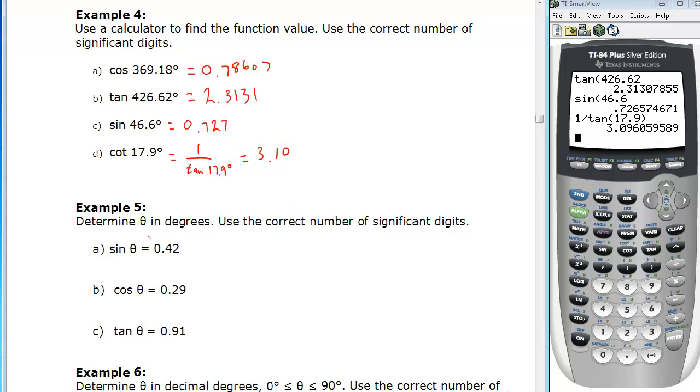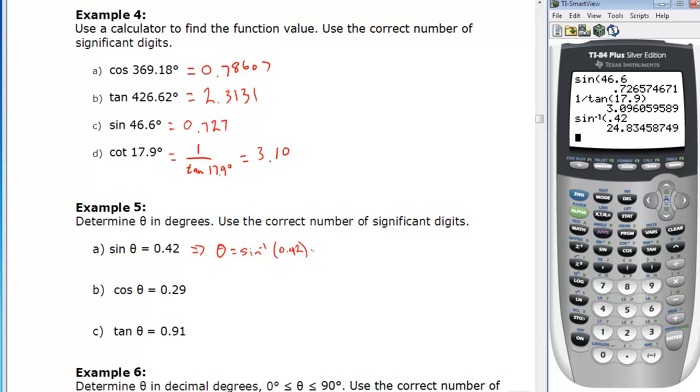Example five asks us to now, instead of starting with the angle, we have the ratio, find the angle. That's the inverse function. To find theta, we do the inverse sine of 0.42. That has two digits, so we'll write our angle to two digits. Second function sine inverse of 0.42 gives us 25 degrees rounded to two digits.